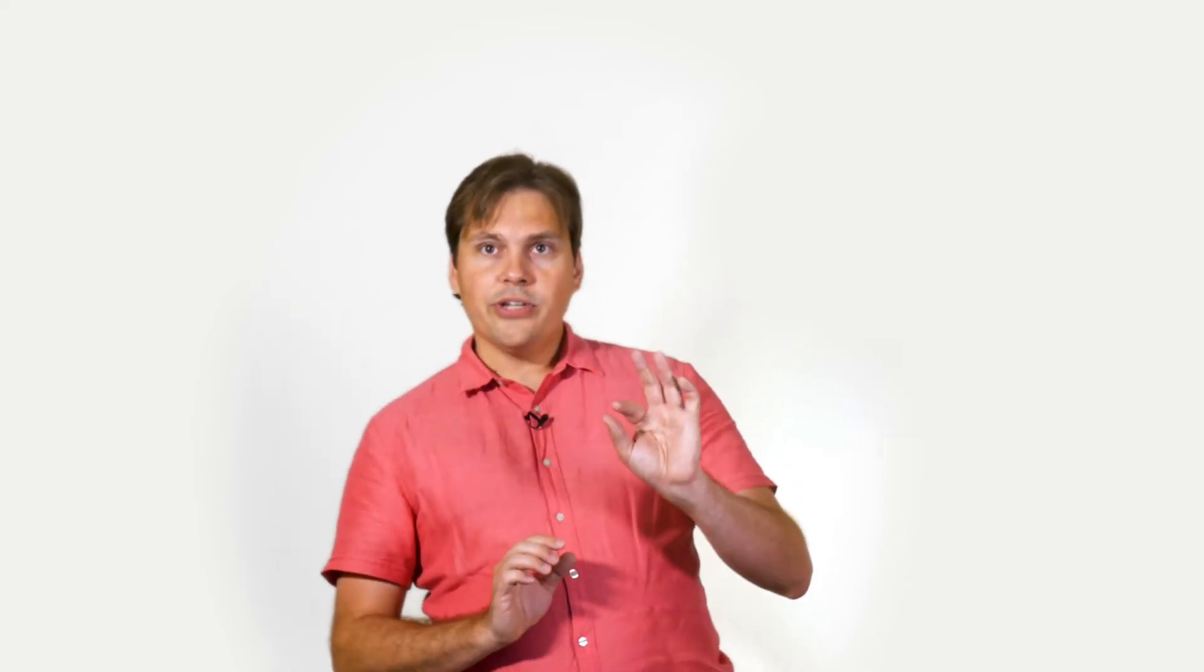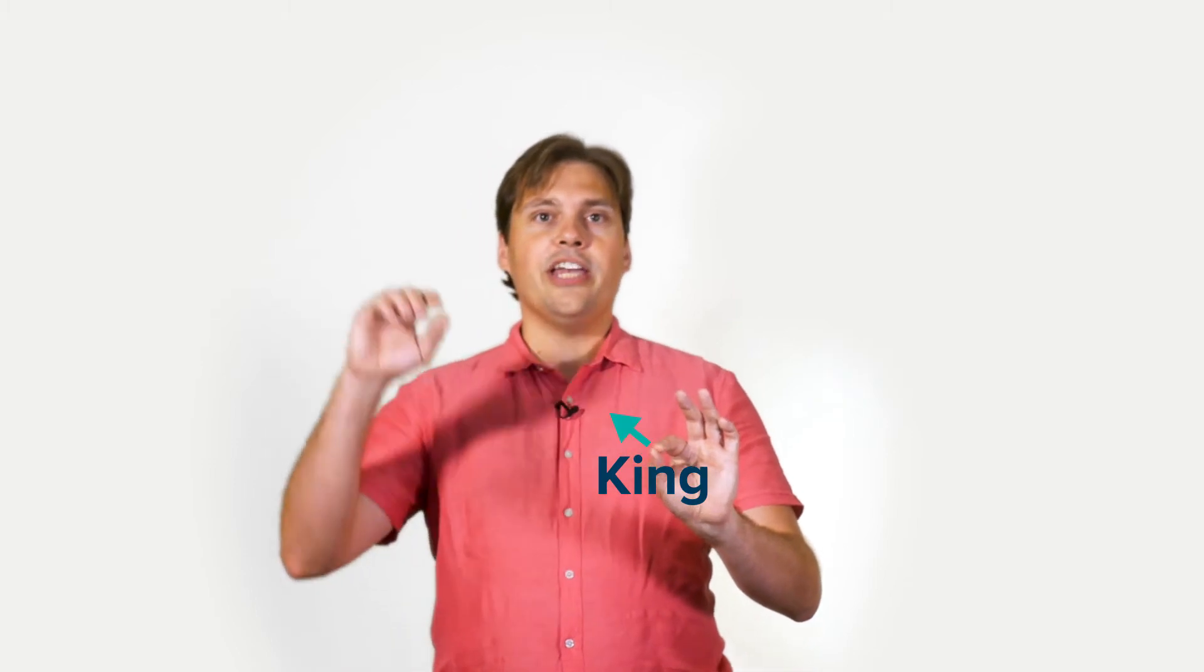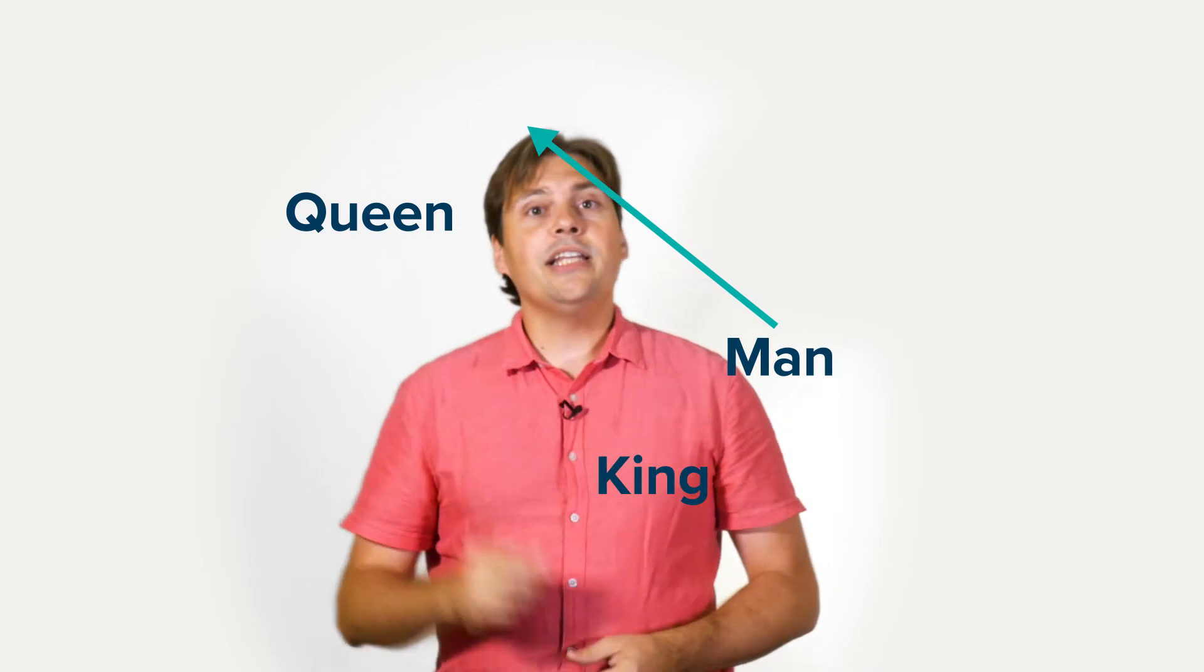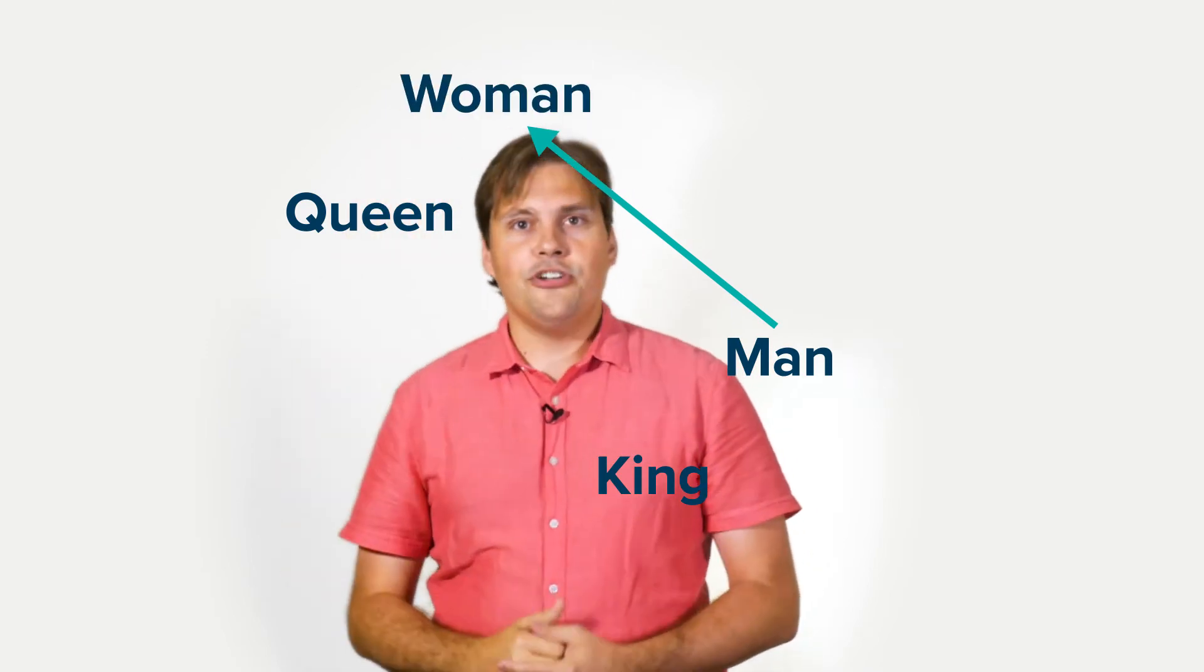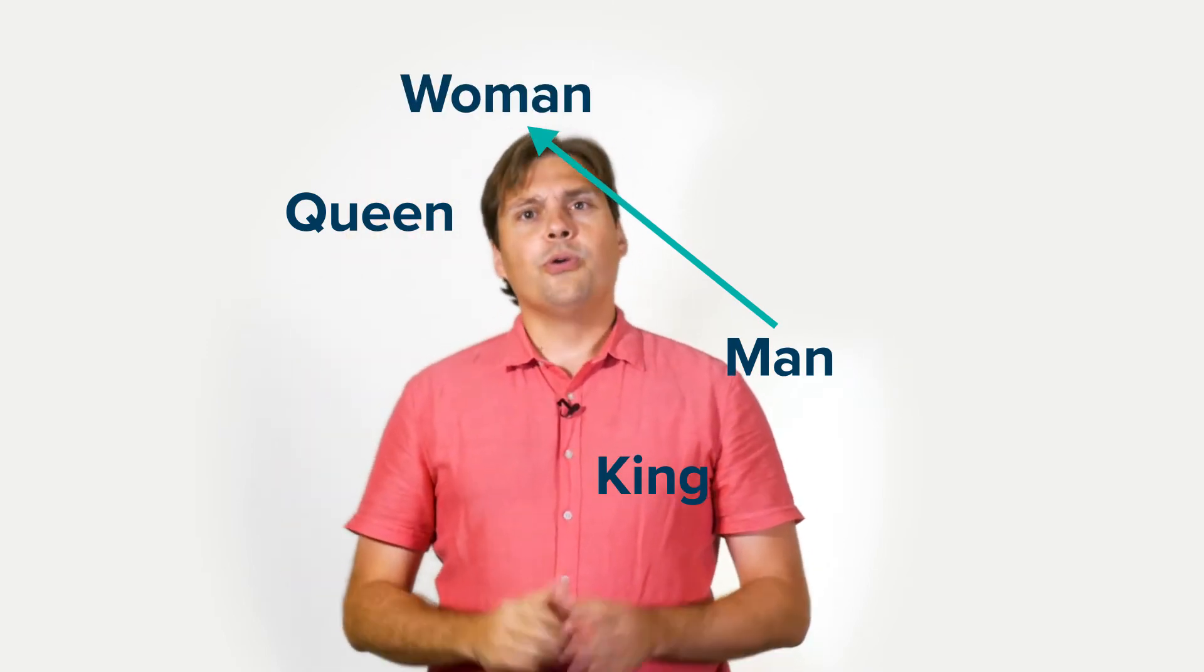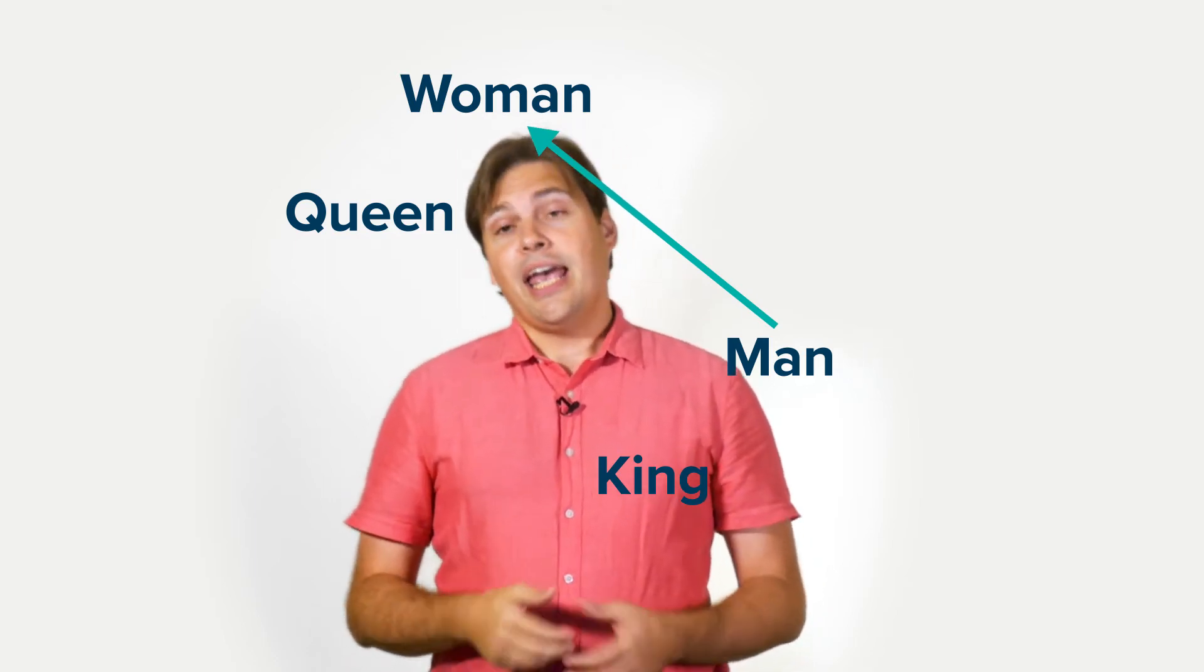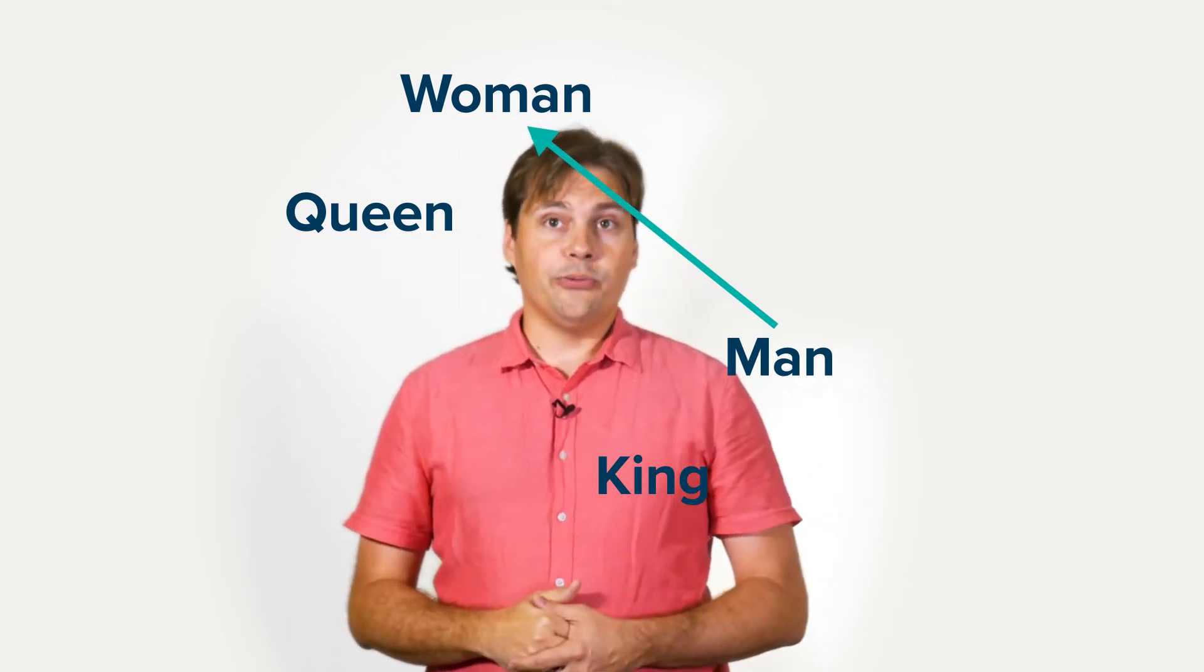One of the interesting and somewhat surprising facts is that these numbers can then be used in algebra-like statements to encode analogies. For example, if we draw an arrow on our sheet of paper starting at the location of the word king to the location of the word queen, and then we move the arrow so that it starts at the word man, we find that the arrow will end at the location of the word woman. So Word2Vec knows the difference between the meanings of the word king and queen, and it knows the difference between many other words as well.